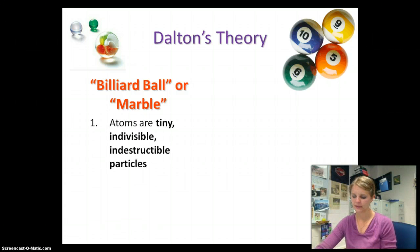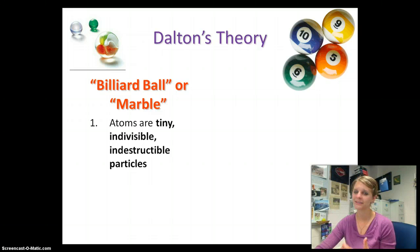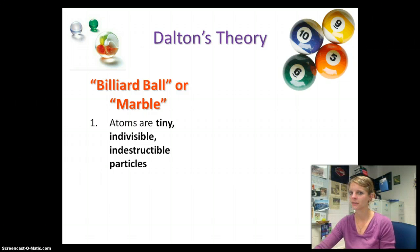His first idea — idea number one — is that atoms are tiny, indivisible (which means can't be divided), and indestructible (can't be destroyed) particles. At this point, Dalton thinks the same thing as Democritus: they both agree atoms are tiny, indivisible particles — just a sphere.